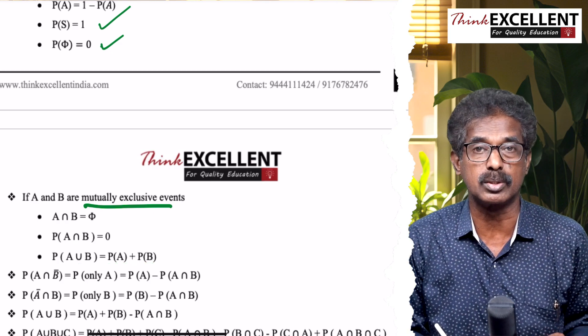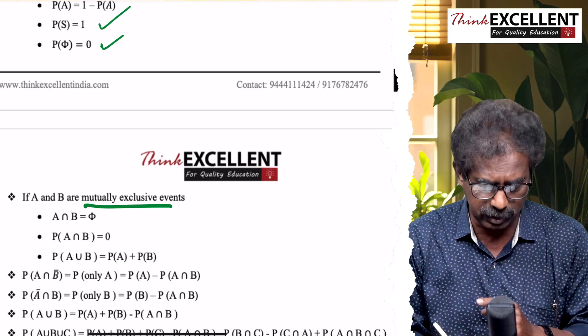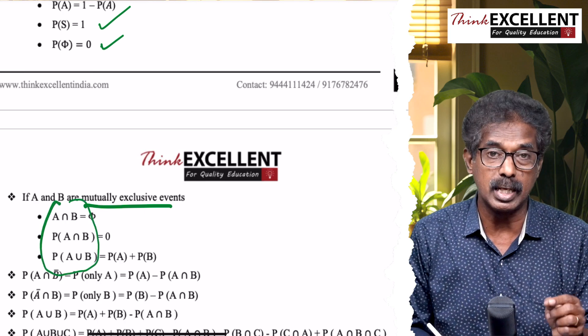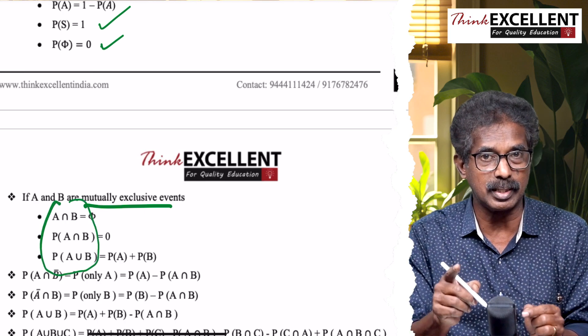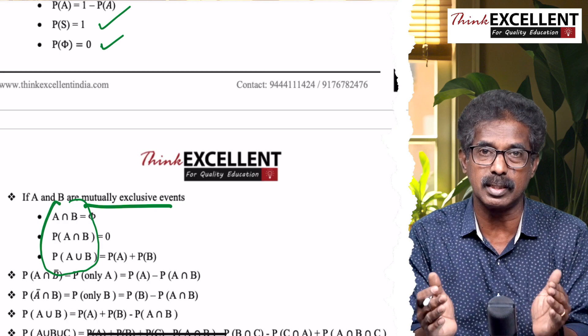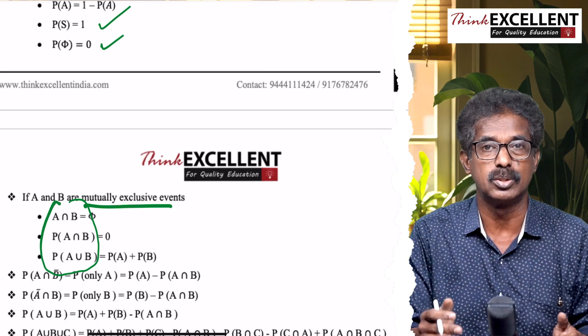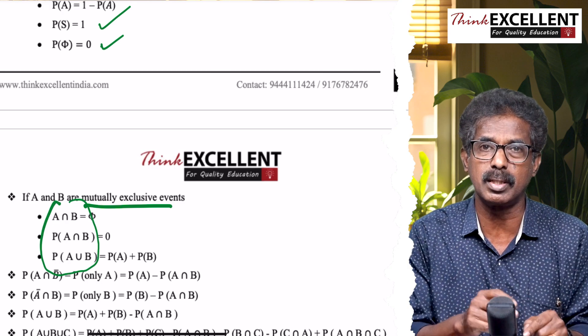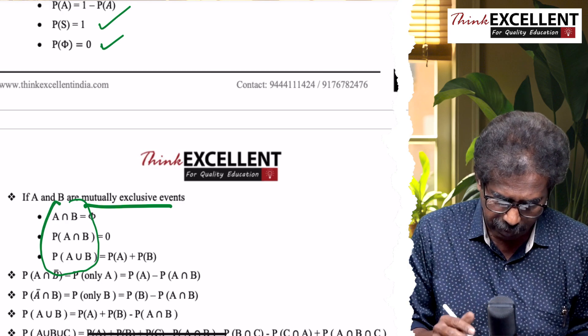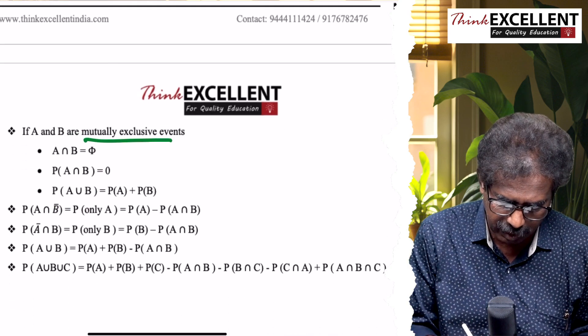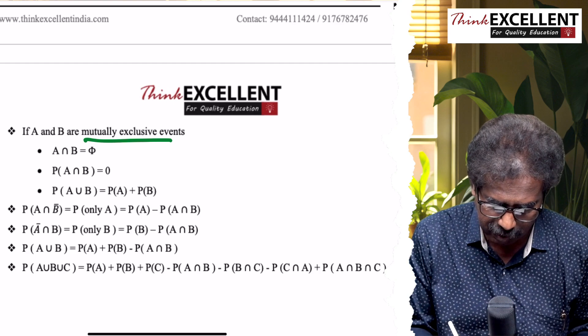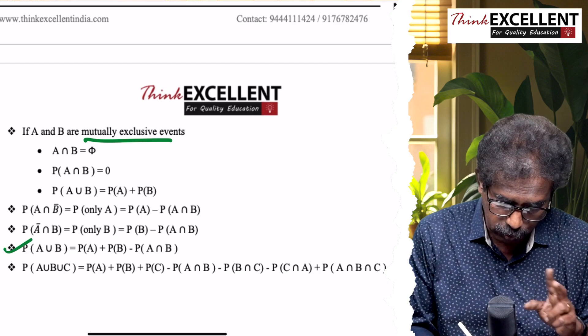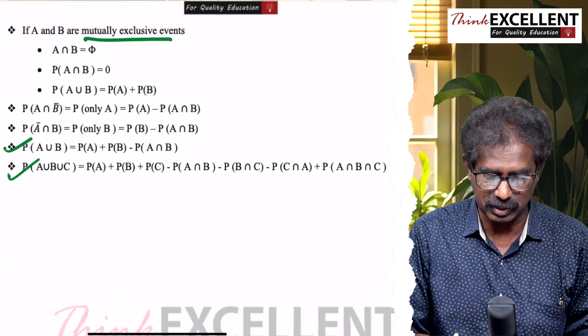Sometimes objective question: mutually exclusive, what is the answer? See what they asked. A∩B - your answer is empty set. Probability - it is a number, so probability of A∩B, your answer is 0. P(A∪B) = P(A) + P(B). Then P(A∩B'), P(A'∩B). Addition theorem on probability for 2 events, and this is for 3 events.